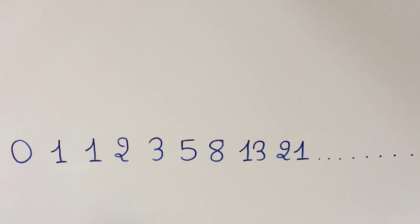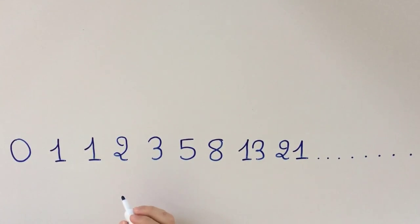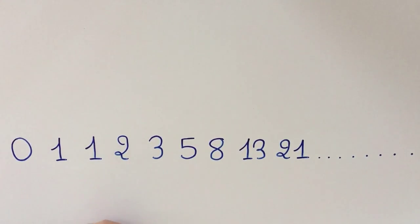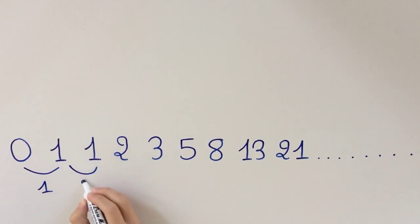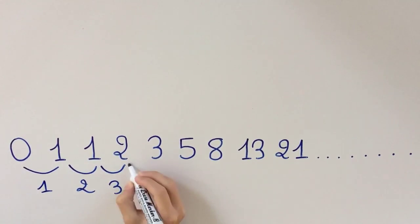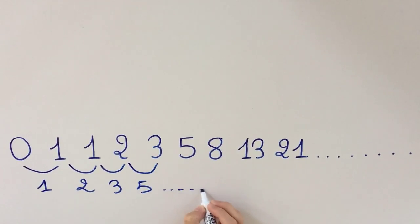The concept of a sequence is that each of its terms is the sum of the two precedent numbers. So as you can see, 0 plus 1 is 1, 1 plus 1 is 2, 1 plus 2 is 3, 3 plus 2 is 5, and so on to the infinite.